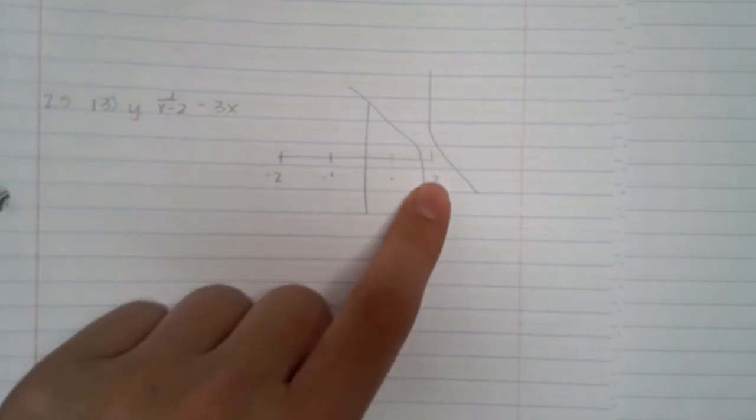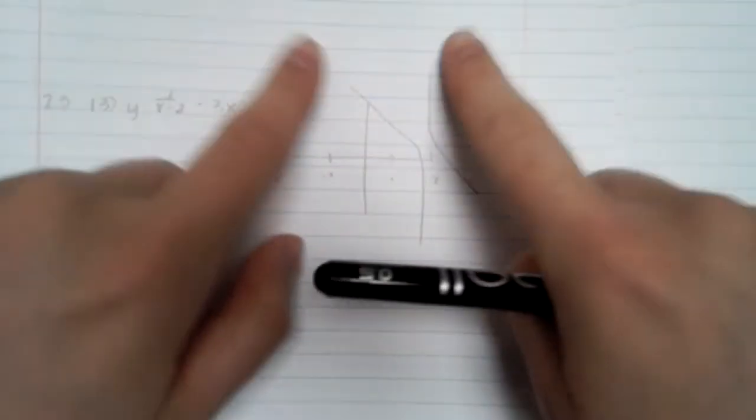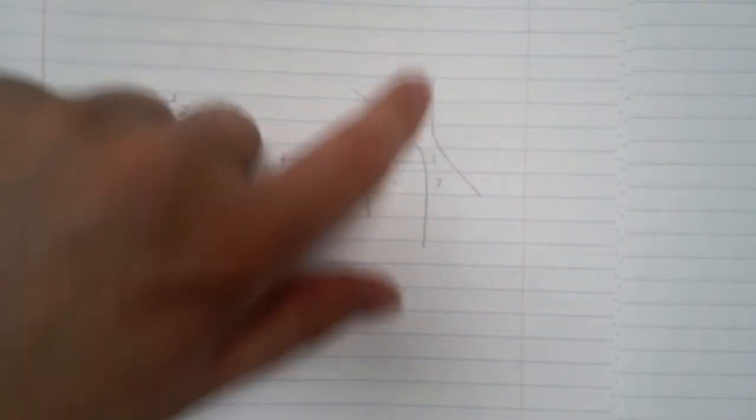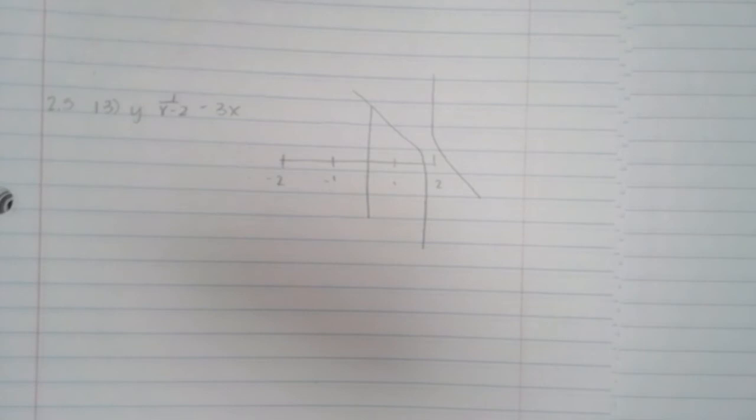So what this is saying - basically, there's a discontinuity at 2 because these two graphs do not occur at 2.